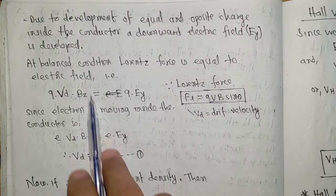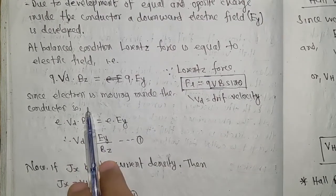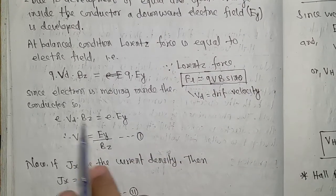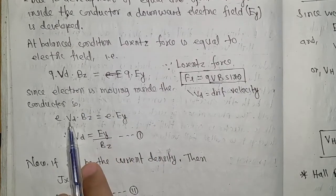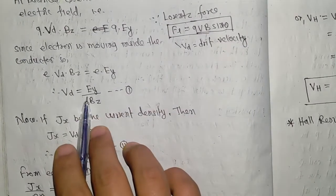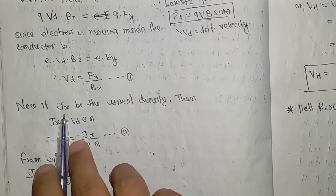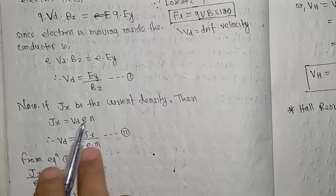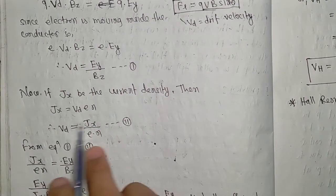Since electrons are moving inside the conductor, the current is flowing. If Jx is the current density, then Jx = nεVD, where n is electron density and ε is charge. So VD = Jx/(nε). This is equation two.